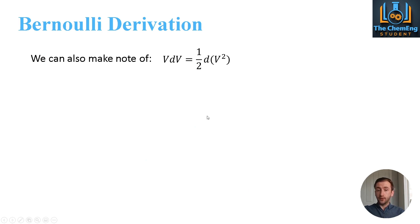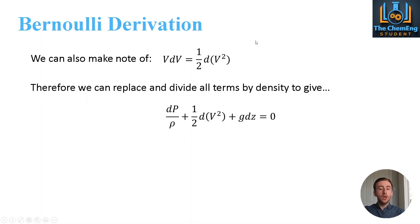So we can also make a note here that vdv, so the change in the velocity, is equal to a half multiplied by the differential of the square of the velocity. So that is a general correlation when we talk about momentum transfer. So what we can then do is replace our vdv, which from the previous equation, with our given system. And we can also divide all the terms by the density. And that will give us this equation here.